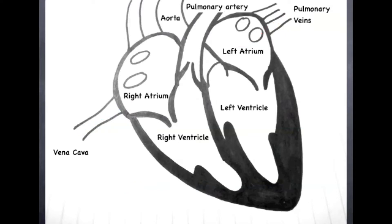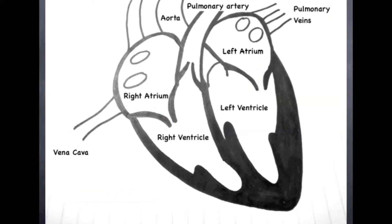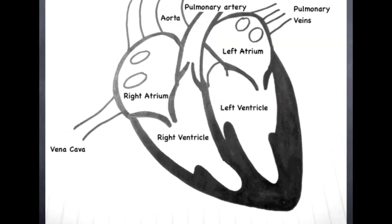The cycle begins again with atrial systole, where the atria contract pushing blood to the ventricles, then ventricular systole pushing the blood outside of the heart, and finally diastole where blood is able to refill the atria.